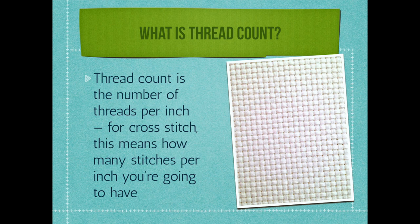So first up, you're going to have to know what thread count actually means. Thread count of your fabric refers to the number of threads per inch. For cross stitch, this means how many stitches per inch you're going to have. There's a sort of a disclaimer about that and I will get to that later on.